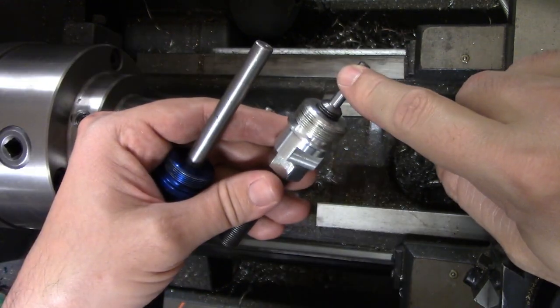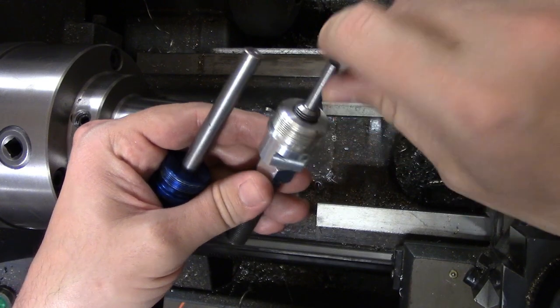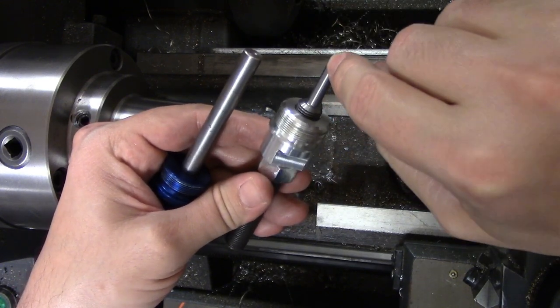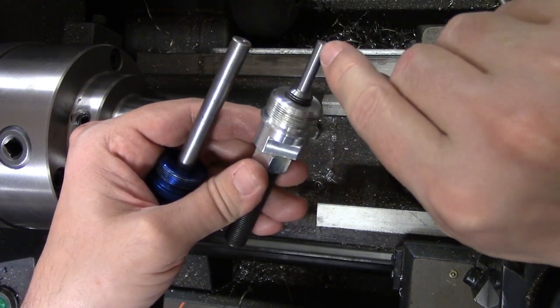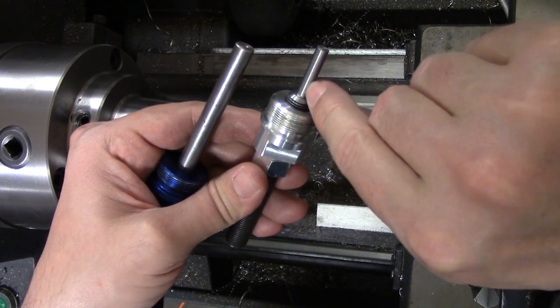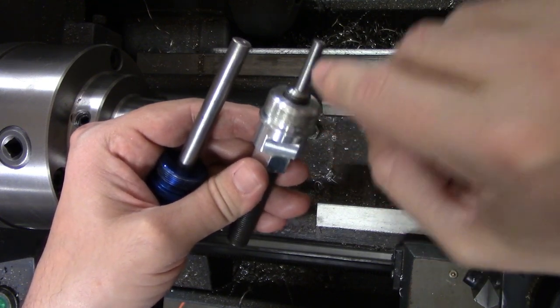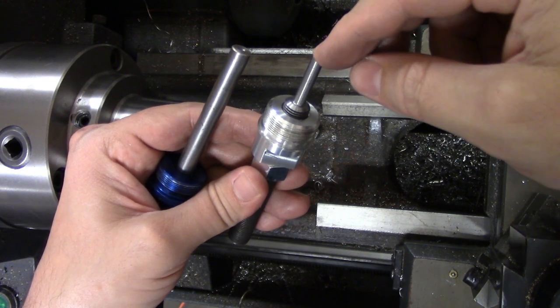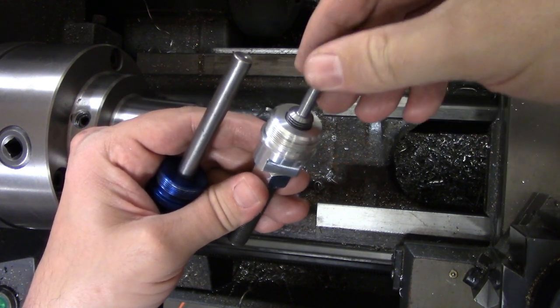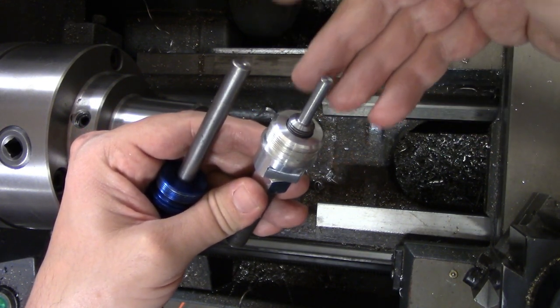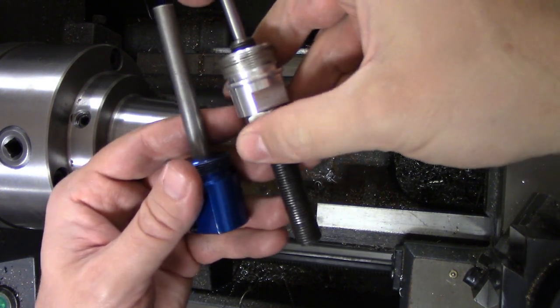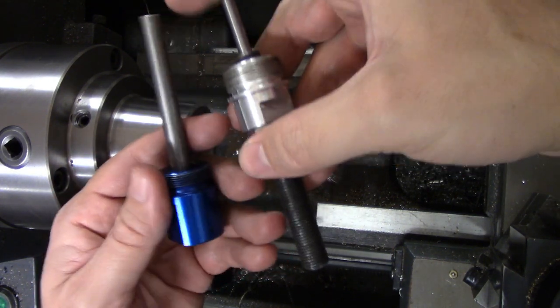The stop rods on collet stops are generally considered to be sacrificial, so you can machine those to suit the job. For example, you might want to turn this down so that it will fit into a smaller diameter collet. Or you may want to drill clearance holes in it so it doesn't interfere with a drilling or a boring or a threading job. You can also make shorter or longer stop rods depending on your needs.